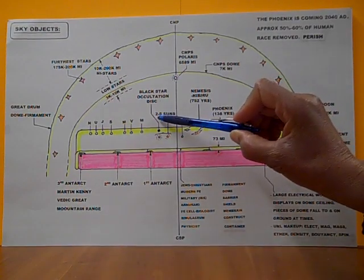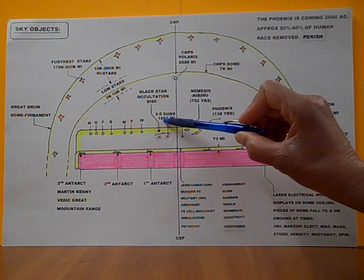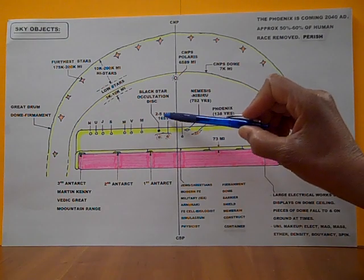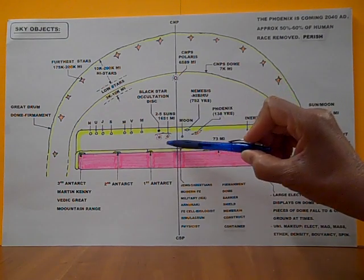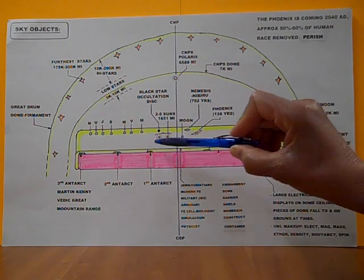And our main Sun is 1,651 miles above the earth's surface. The other two to five suns, as far as I can tell, every 100 or 200 years, they line up.